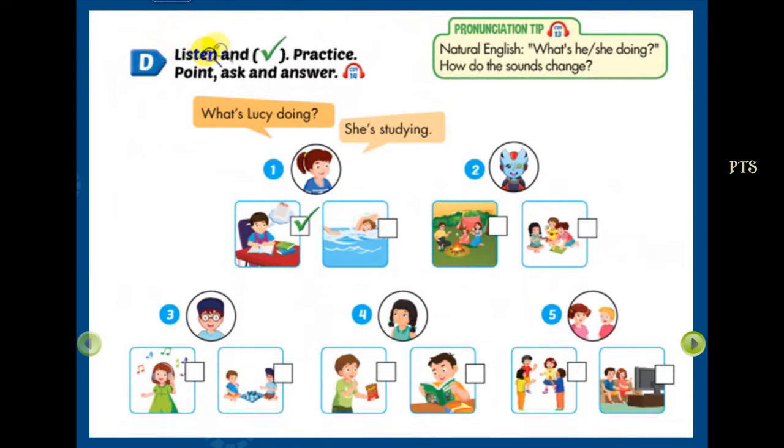Listen and tick the box. Practice point: ask and answer. Look at the pictures and listen. There is one example. One: What's Lucy doing? She's studying. Can you see the tick? This is an example. Now listen and put a tick in the box.